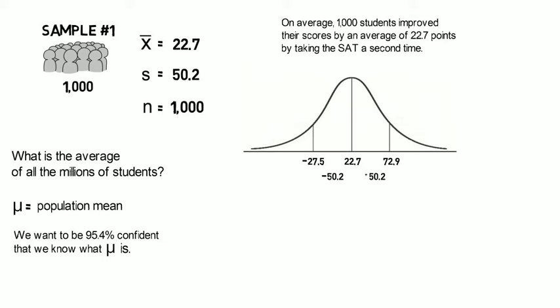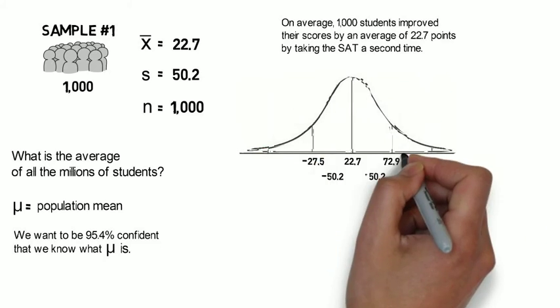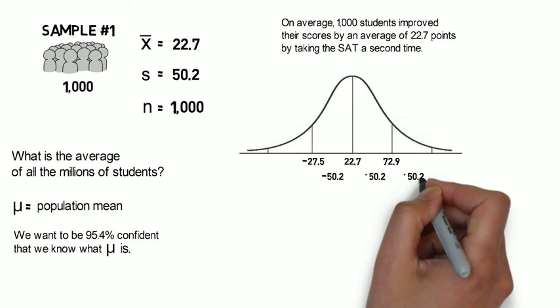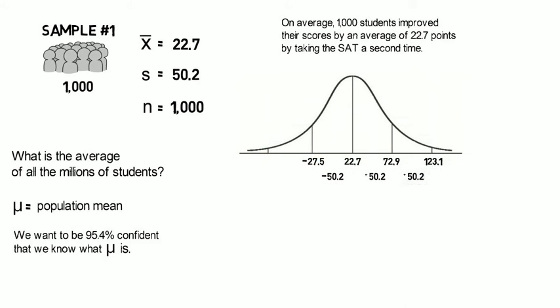Now what we need is two standard deviations. Let's see what that would look like on this graph. If we go up another 50.2, now we're at 123.1 better. And if we go down two standard deviations, we're at 77.7 points worse. But what we've done is captured 95.4% of all test scores in this sample of 1,000 students. We can use this number, 95.4%, in two standard deviations, to find our population mean.